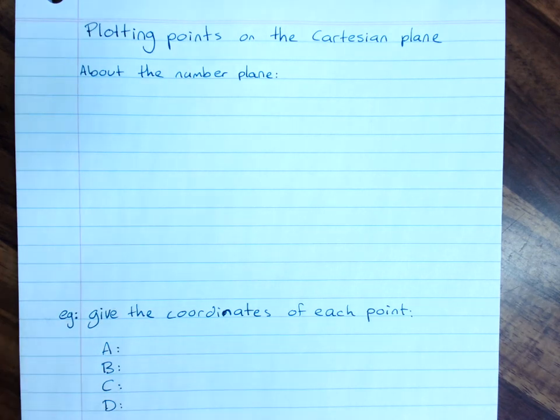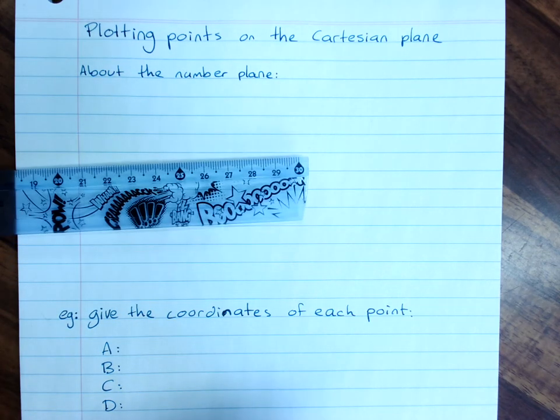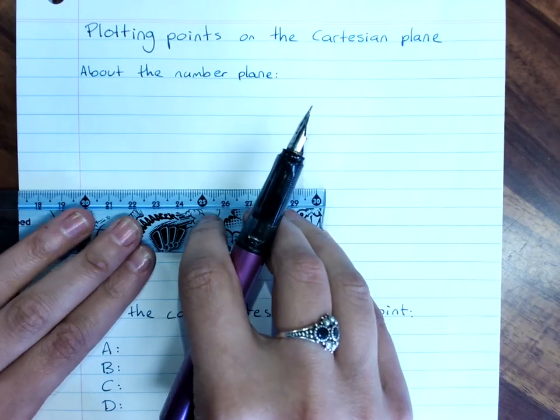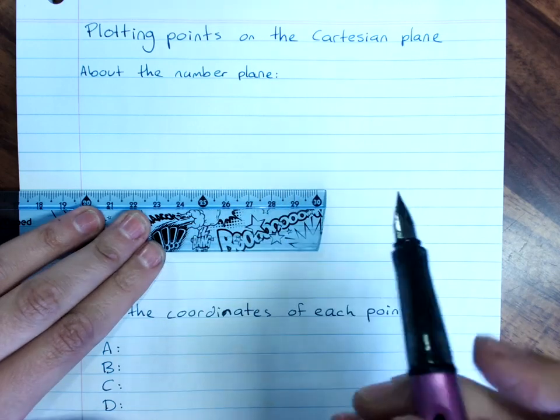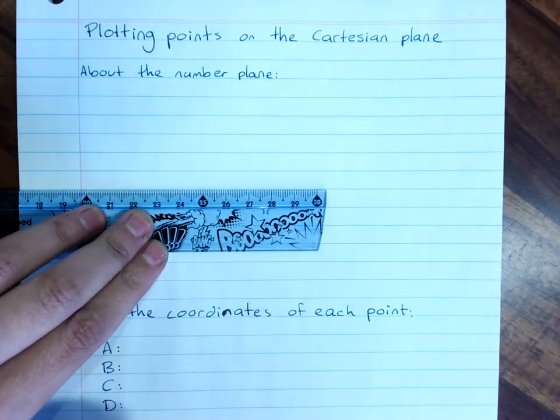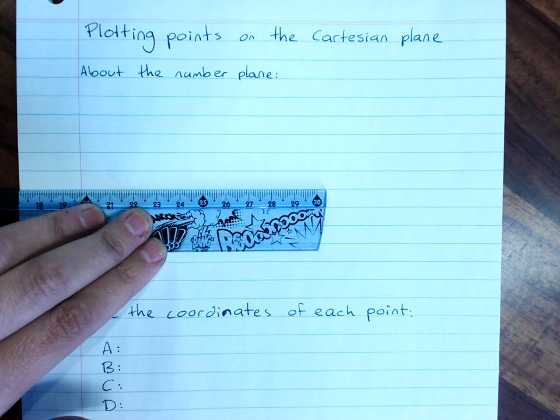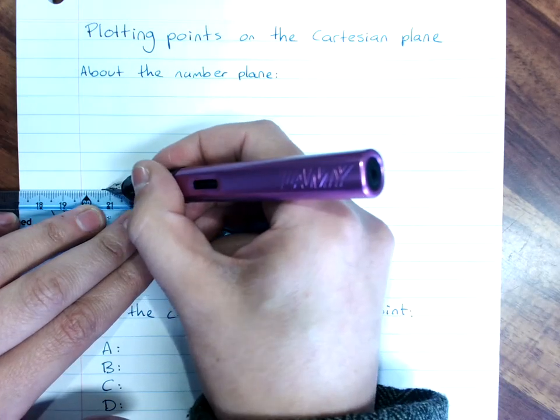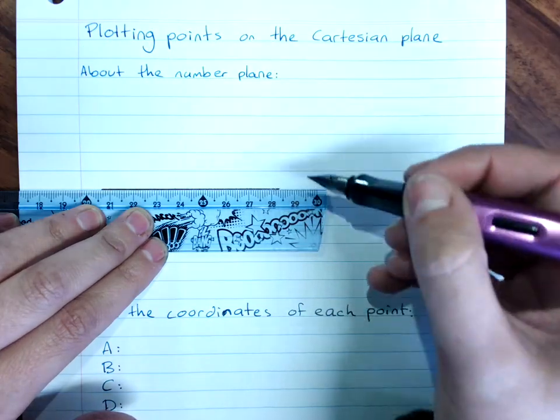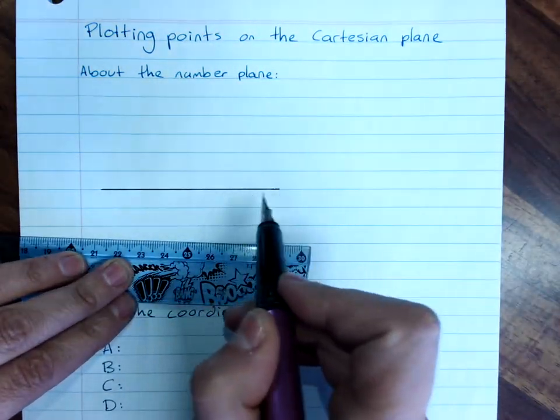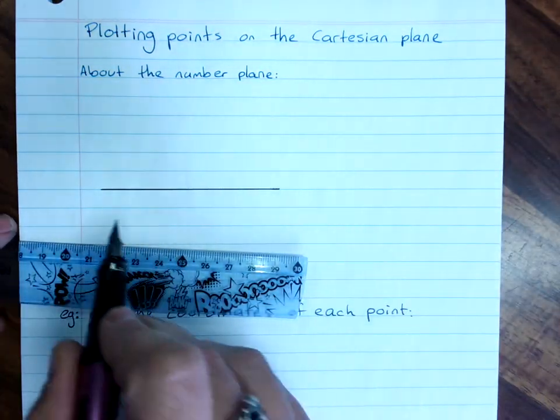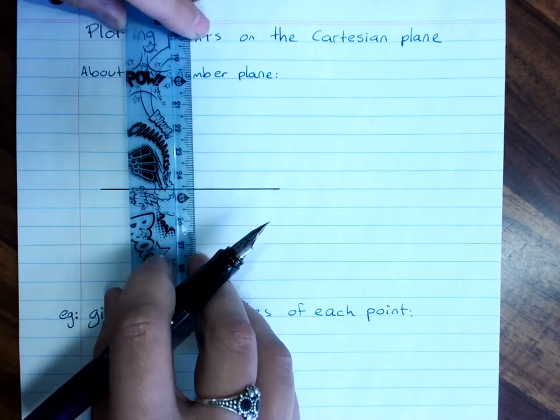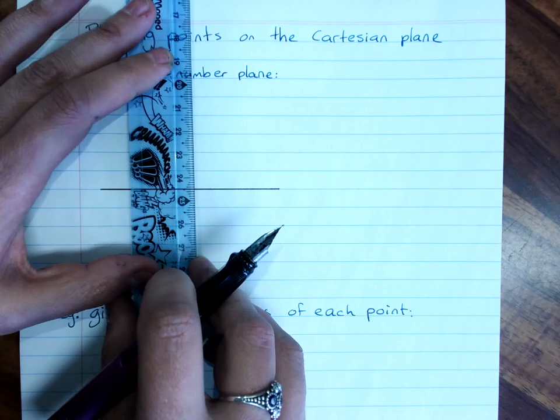A number plane is two number lines crossed at right angles. If you're drawing a number plane you must use a ruler and it's a good idea to use grid paper, but I didn't bring any. I'm sorry because I use this lined paper. And you put your number line on the grid line. It's got a horizontal number line and a vertical number line.